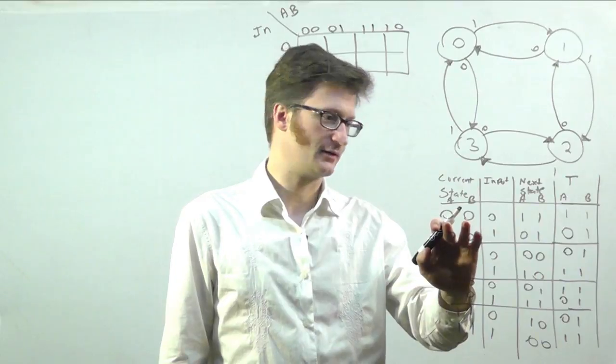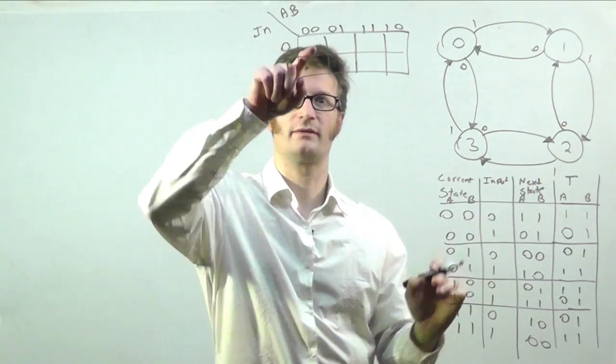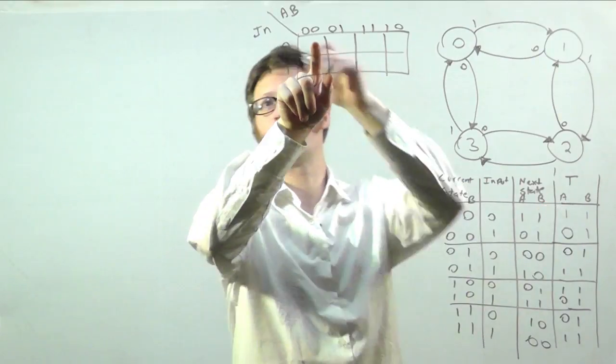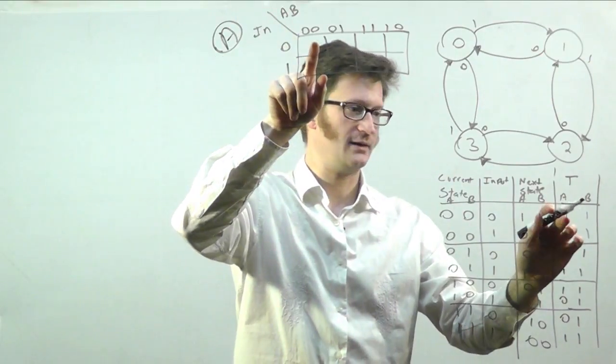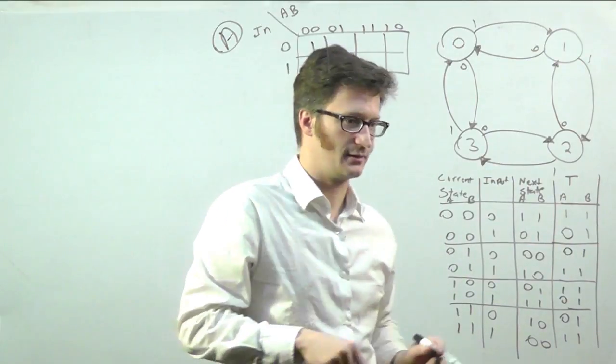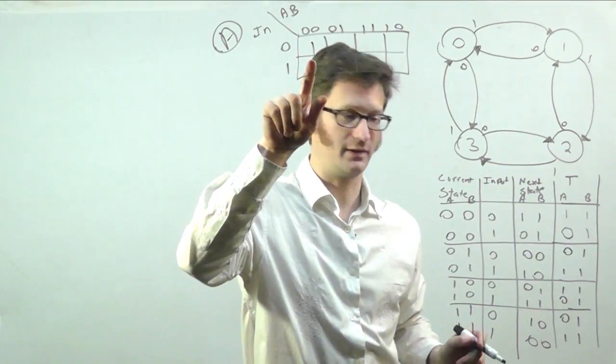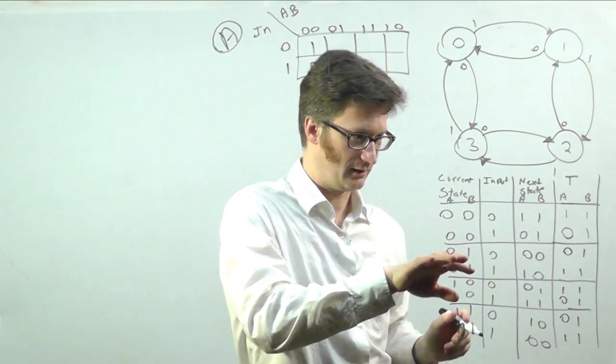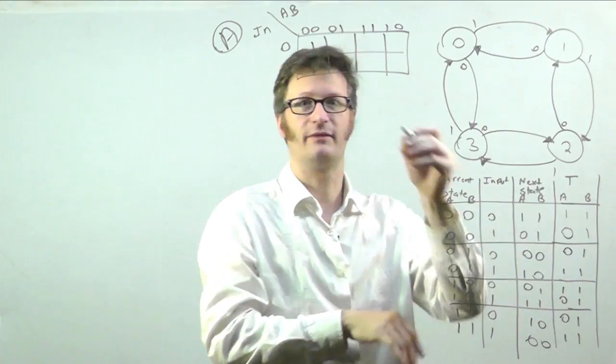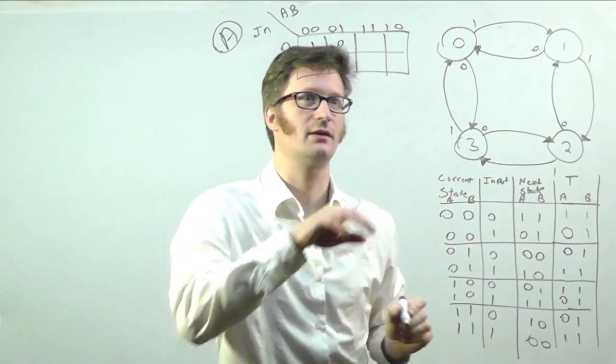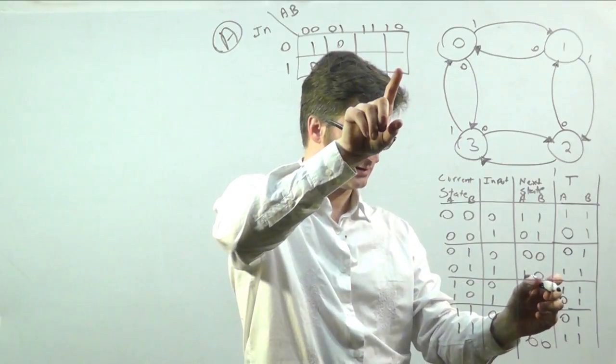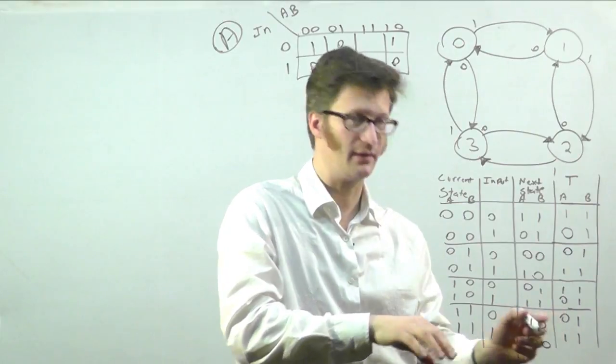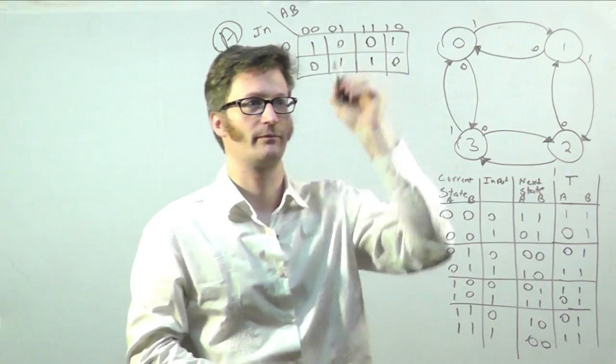All right. So if my current state is zero, zero, and my input is zero, that corresponds to this box, and I'm doing A right here, I need to have that be a one. And if it's zero, zero, and input is one, I need a zero. And we'll just go down through here. That's a zero and a one. And then we're doing this one, one, zero. And then this one, we have zero, one.